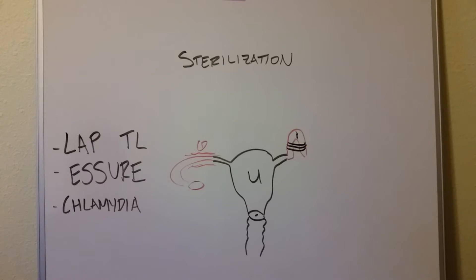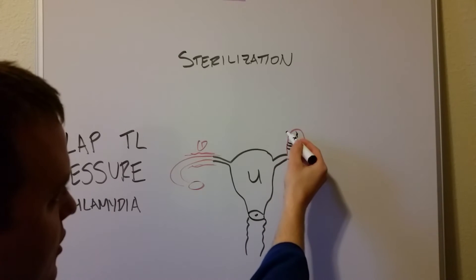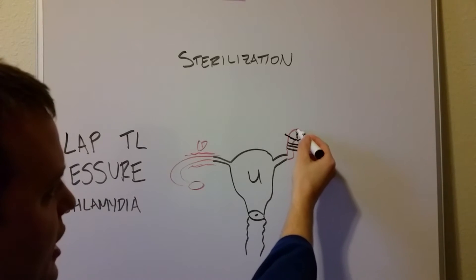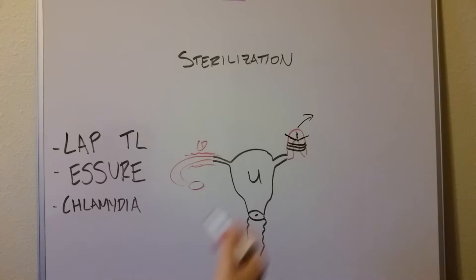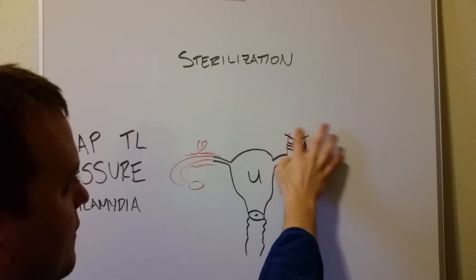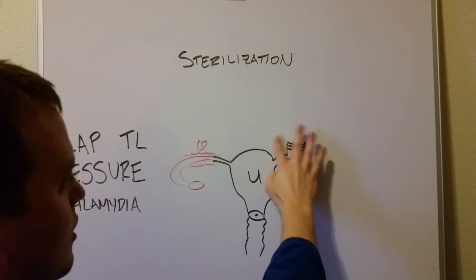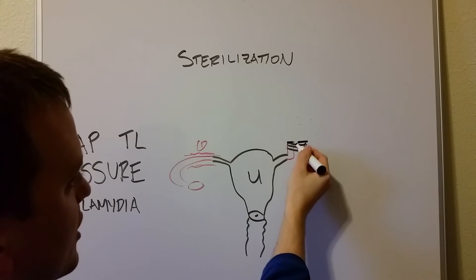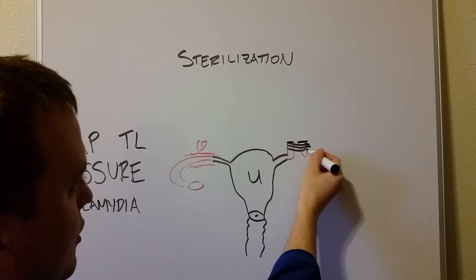But they're not done there. They will actually cut out a section of the tube — a cut here and a cut here — take this section away and send it to pathology or the lab, who confirm they have the entire fallopian tube section and you don't need to go back in. After removing this section, we're left with two ends that have been cut and are no longer attached, though still tied together.